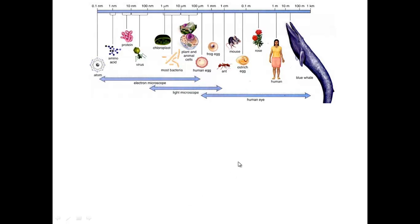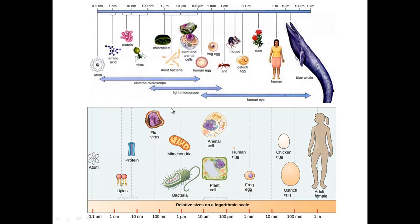Talking about cell size: we have an ostrich egg at almost a tenth of a meter, then a frog egg and a human egg in millimeters to micrometers, then chloroplasts and bacteria at about the same size — one micrometer — and mitochondria and bacteria are also the same size. Plant and animal cells are much larger, organisms even larger, and the blue whale is the largest at about 30 meters — roughly football field-sized.